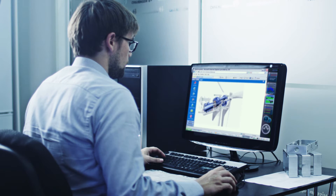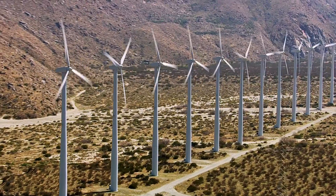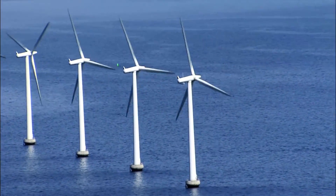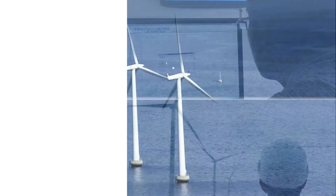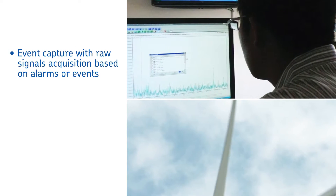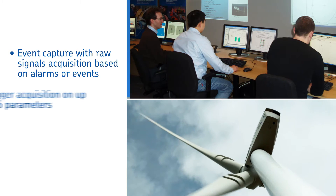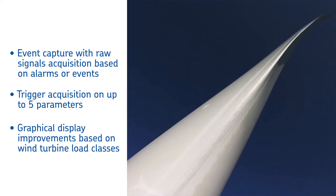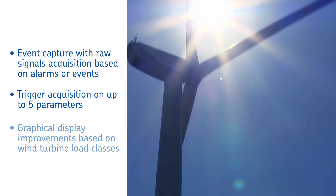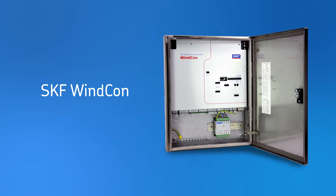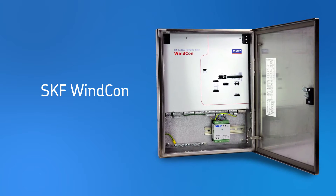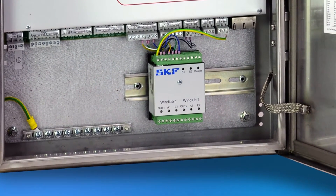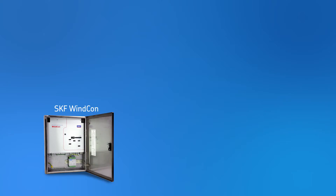Our updated SKF Aptitude Observer software makes turbine service even more efficient with many new features, including event capture with raw signals acquisition based on alarms or events, trigger acquisition on up to five parameters, and graphical display improvements based on wind turbine load classes. The SKF Windcon system also includes an RS485 Modbus, which can be used to transfer measurement data to the Windcon unit from other systems.